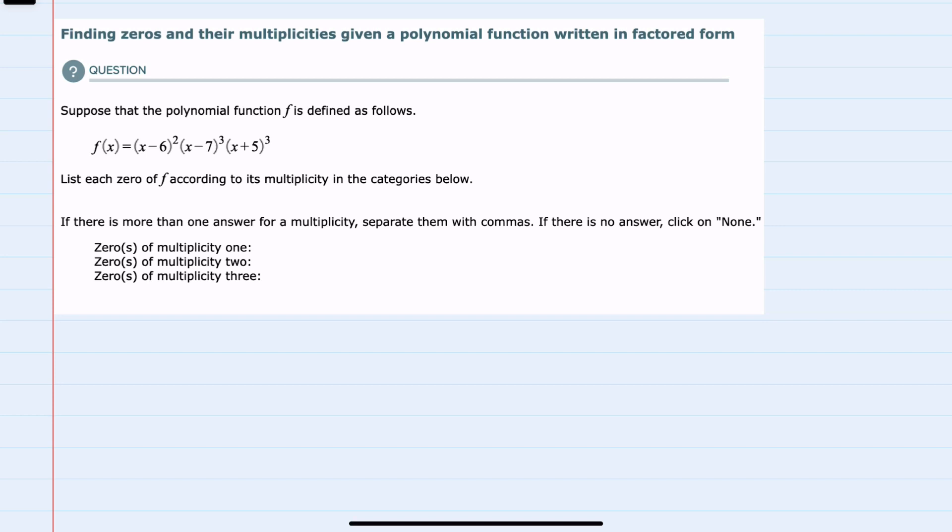Here we're given the function f of x. We're asked to find the zeros, noting that their multiplicity could be either 1, 2, or 3.